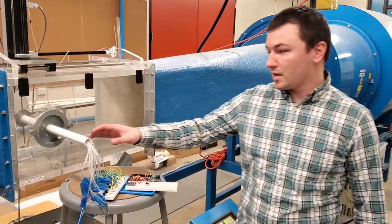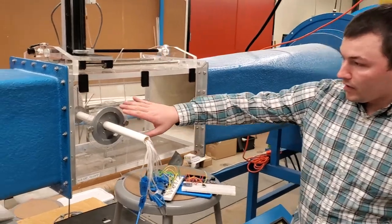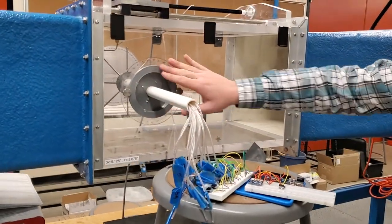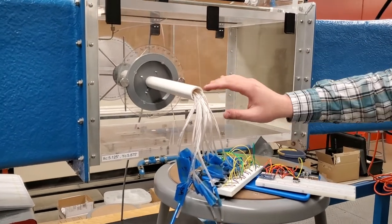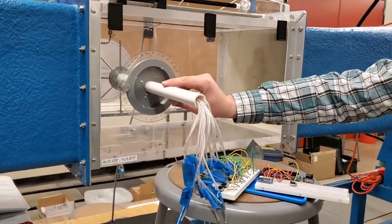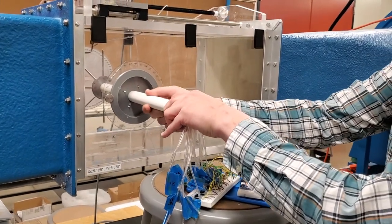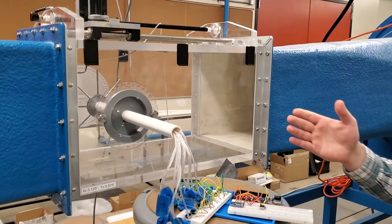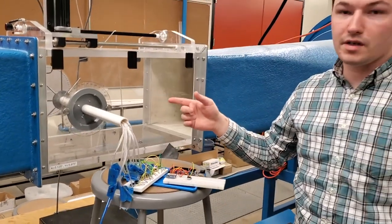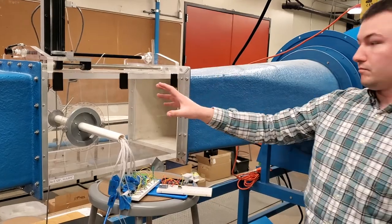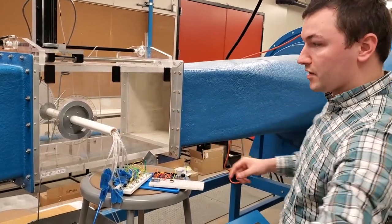We have our prototype installed. Right here we have a 3D printed piece that we made to mount it to the wind tunnel. And this piece is a pretty tight fit with this PVC pipe, and that allows us to move it in and out, like so, so we can actually measure the velocity profile of the wind tunnel using our prototype.